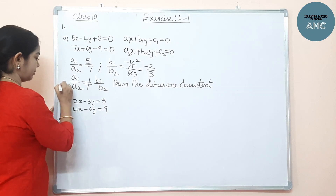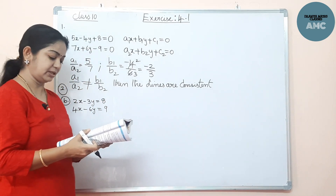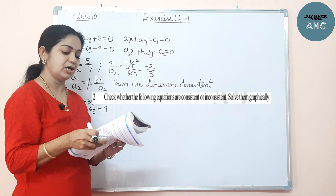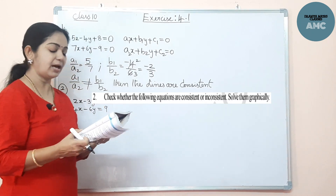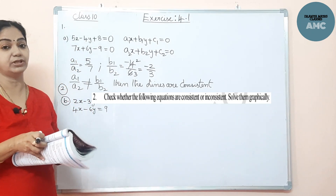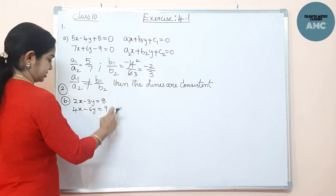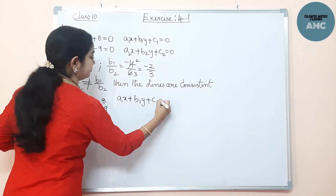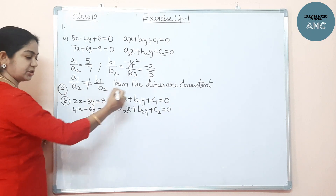Now the second problem is a graph problem. There are about nine problems in this section. The question asks: check whether the following equations are consistent or inconsistent and solve them graphically. This type of question comes in the examination for four marks. We have to check consistency and then solve graphically, just as we did in the previous video session with the example problem. We compare with the general forms a1x + b1y = 0 and a2x + b2y + c2 = 0.